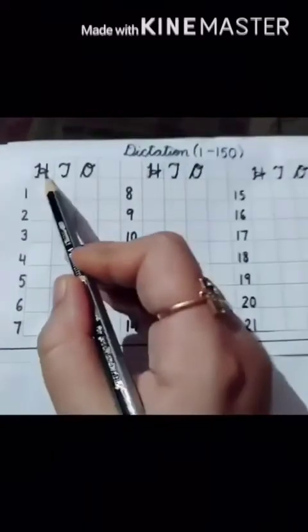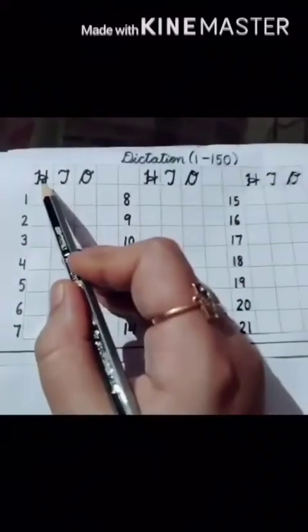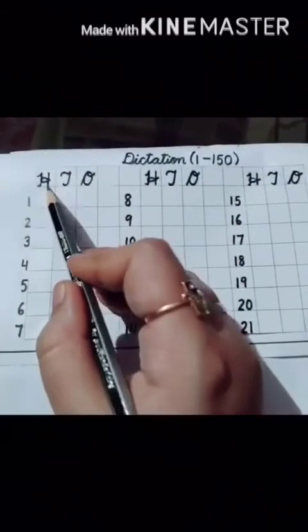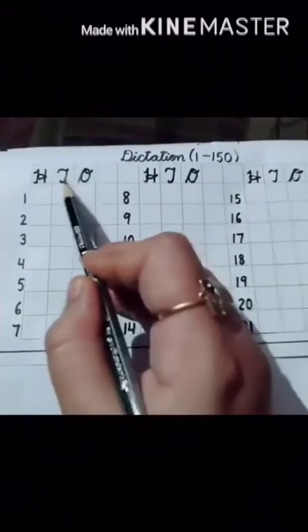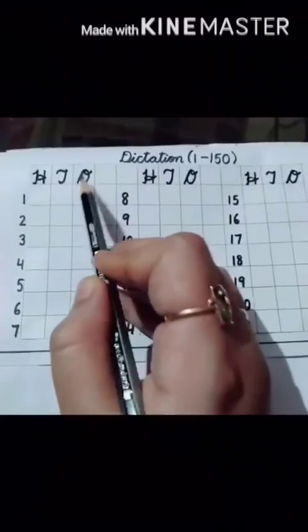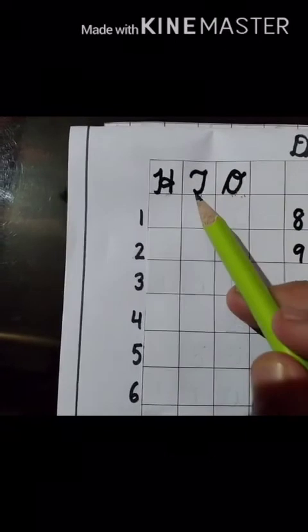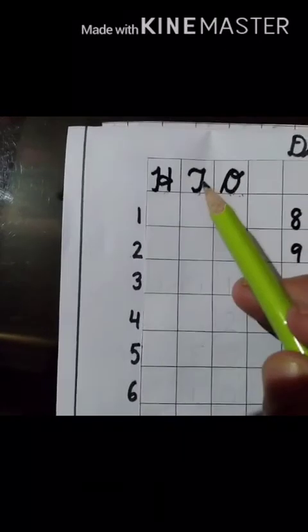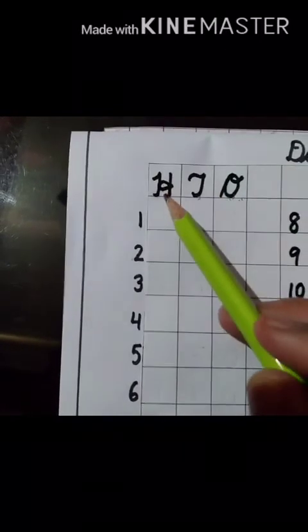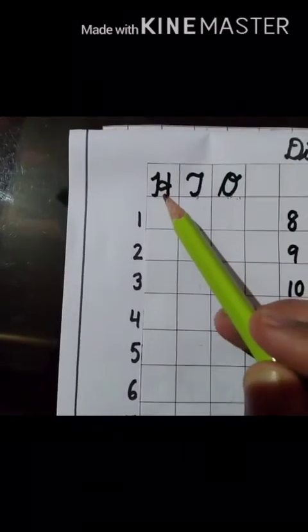So first of all you have to write H, T, O. O means ones. T means tens. And H means hundred.